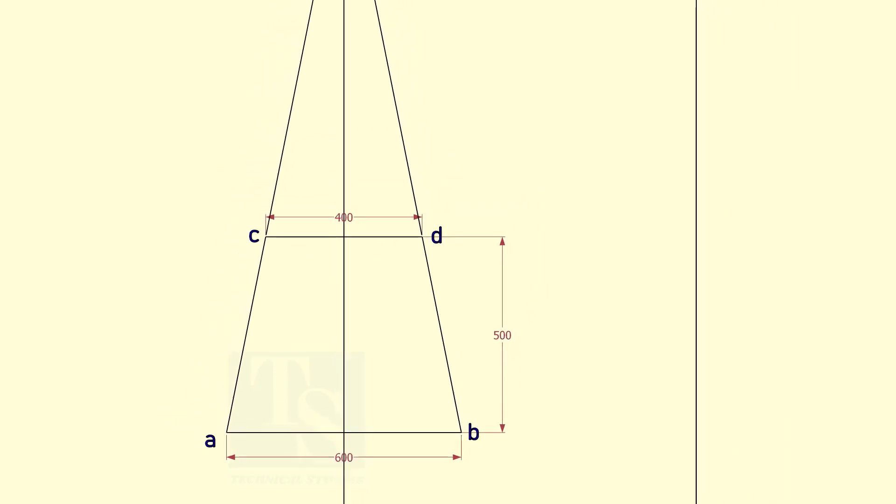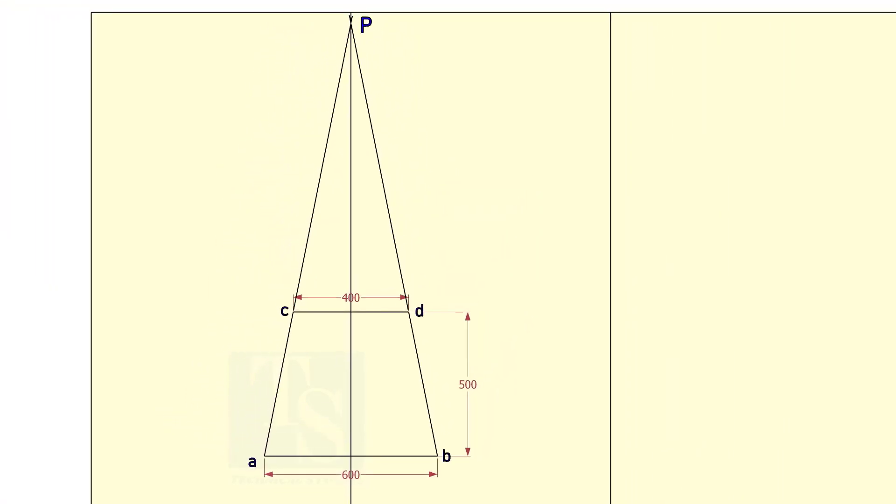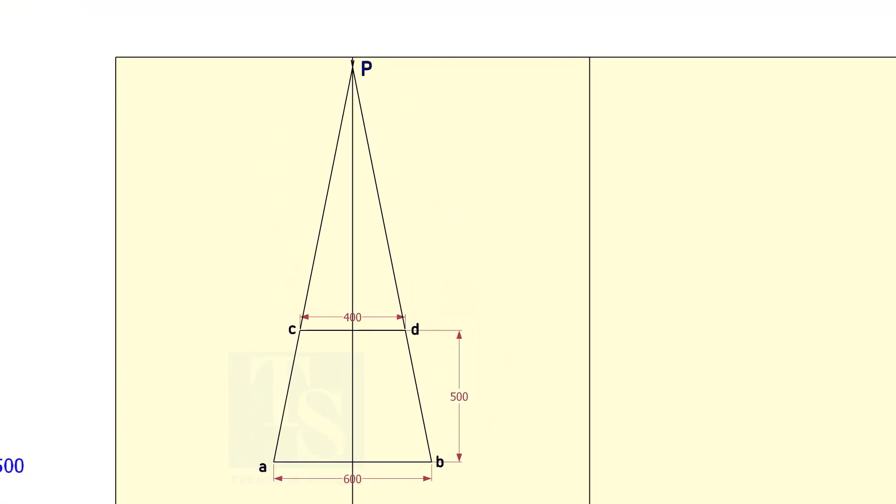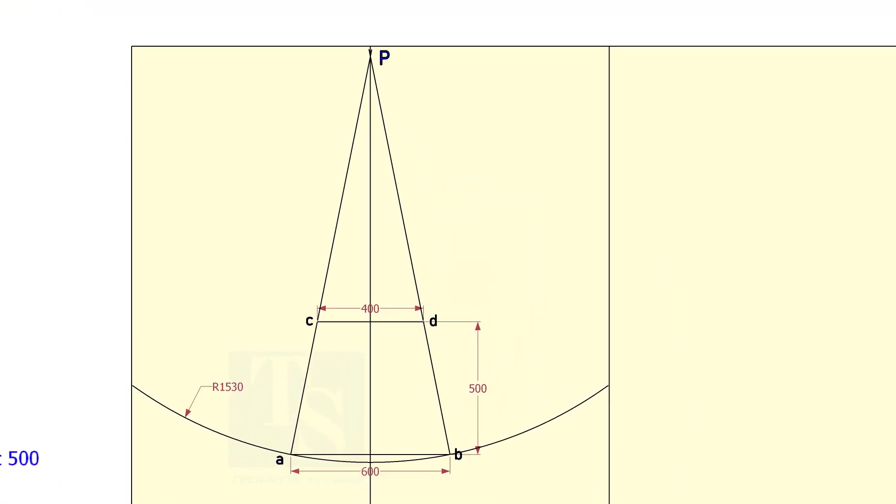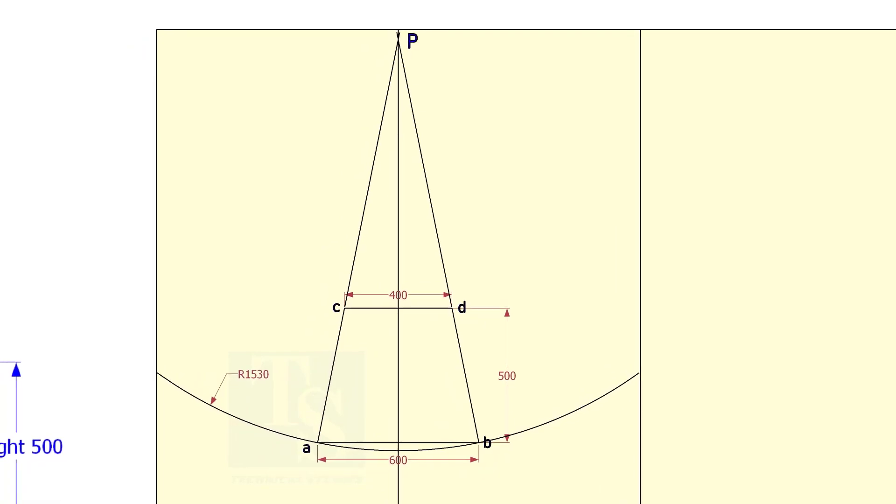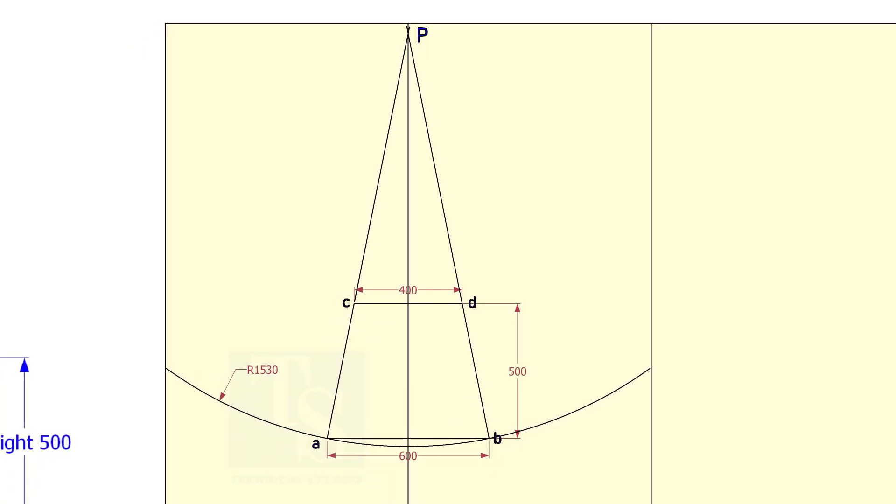Extend the lines AC and BD until the lines intersect each other. Draw an arc, centering P, and the radius PA. Draw the arc, PC.